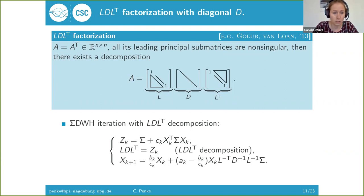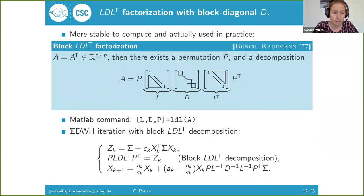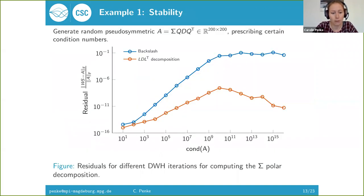In fact, this is not the LDLT factorization that is used in practice or which is implemented in MATLAB, for example. In MATLAB, what you get when you use the LDLT command is the block LDLT factorization. This looks similar, but now we have a permutation on the left and on the right side, and D is allowed to have two by two blocks on the diagonal. This way we don't need any conditions on A and it becomes more stable to compute. If you use this decomposition to rewrite the iteration, you end up with this iteration.